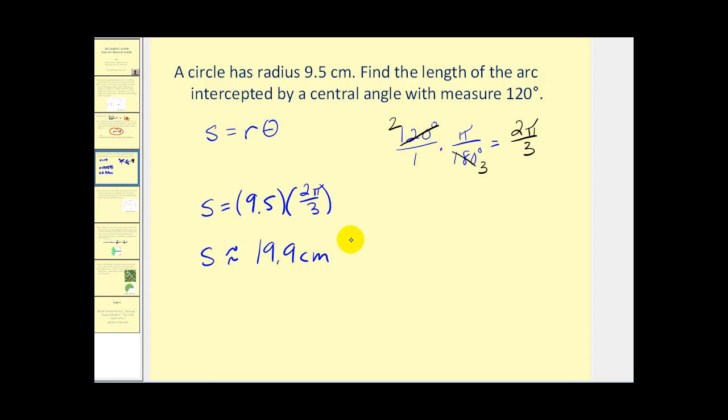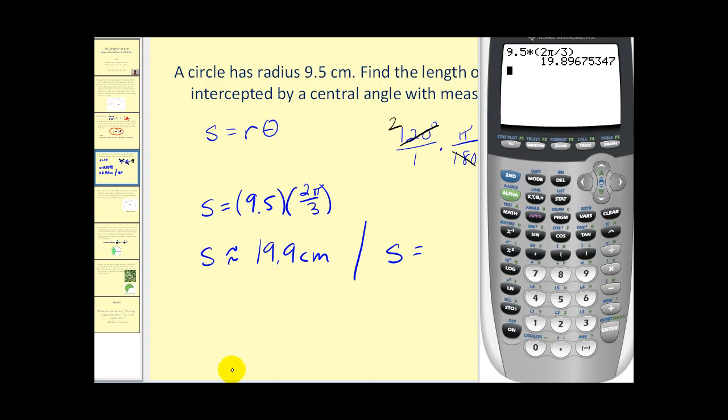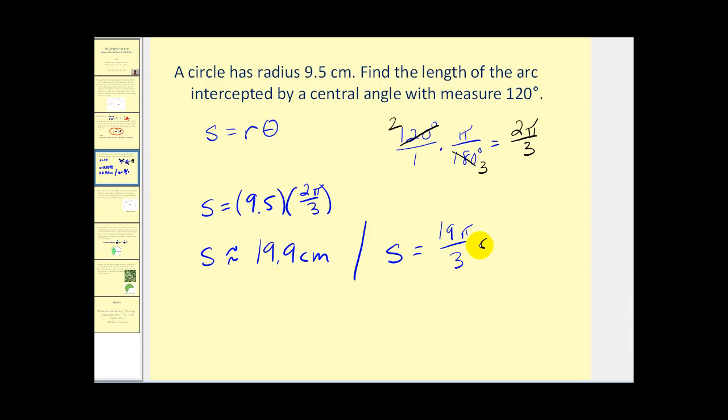If they ask for the exact arc length, we should leave it in terms of π. Let's go back to our calculator. Because we're going to leave π in our answer, we multiply 9.5 times 2/3. Convert that to a fraction, we have 19/3. Probably recognize this as 6 and 1/3, but since we're leaving in terms of π, we'll write 19π/3. So 19π/3 centimeters would be our exact answer, and the previous would be our decimal approximation.